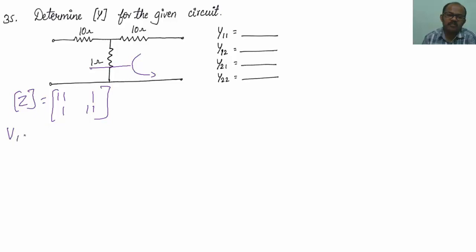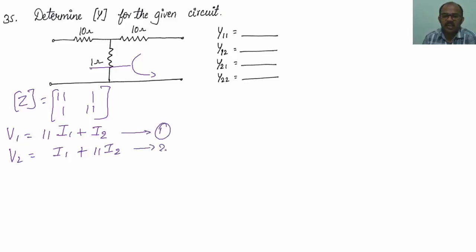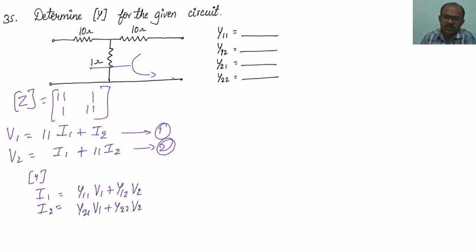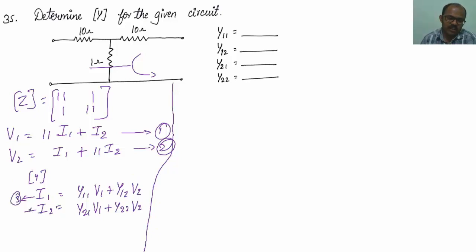So the Z parameter equations are: V1 equals 11·I1 plus 1·I2 (equation 1), and V2 equals 1·I1 plus 11·I2 (equation 2). For Y parameters, I1 and I2 are expressed as: I1 equals Y11·V1 plus Y12·V2 (equation 3), and I2 equals Y21·V1 plus Y22·V2 (equation 4).